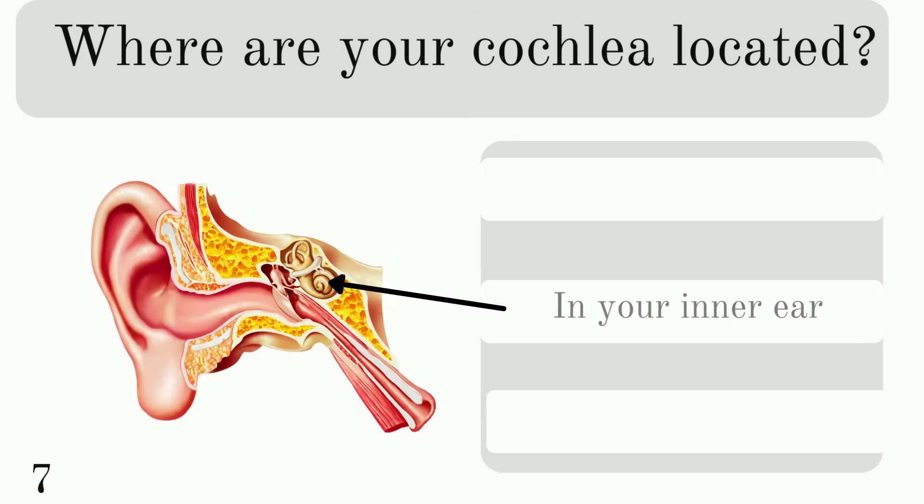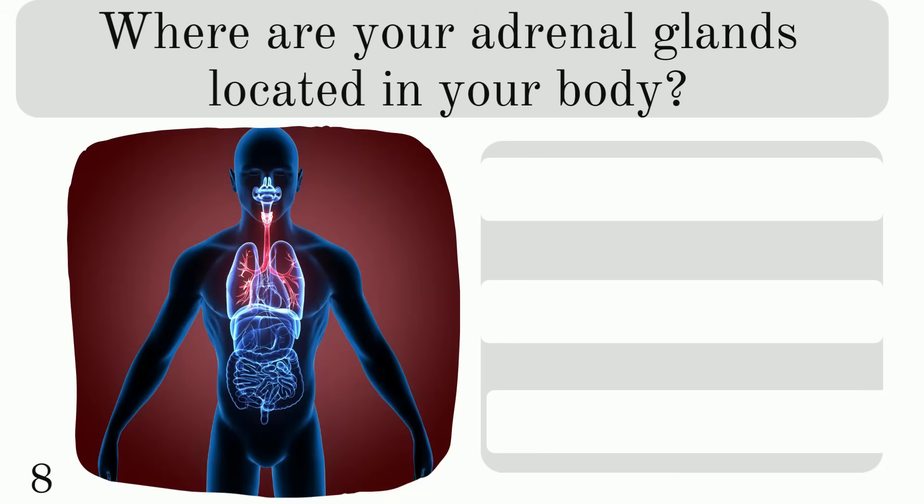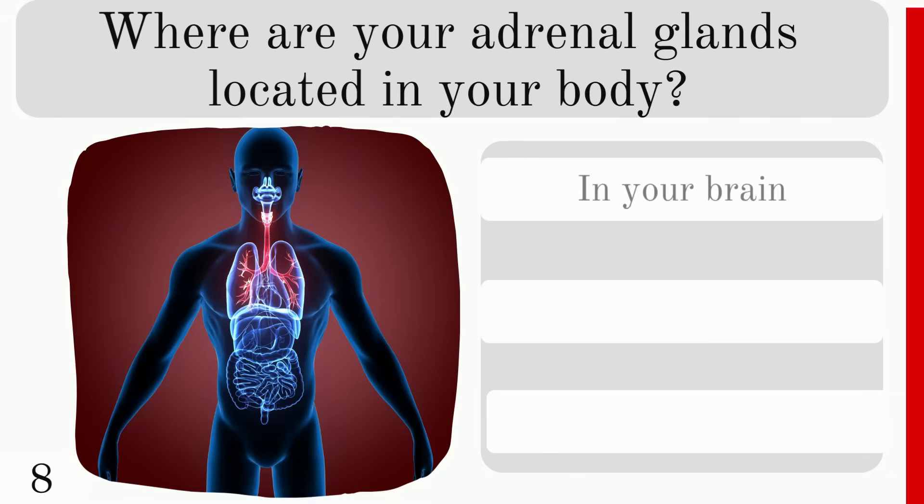And they are in your inner ear. Where are your adrenal glands located in your body? Are they in your brain, armpits, or on your kidneys?